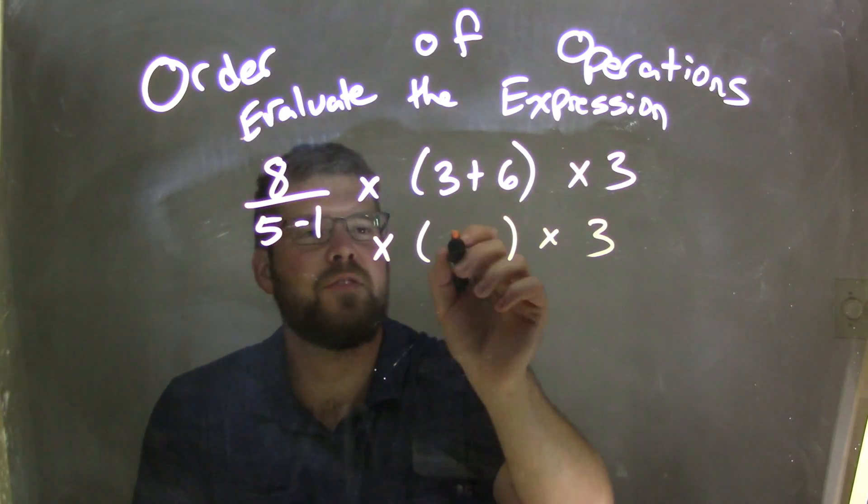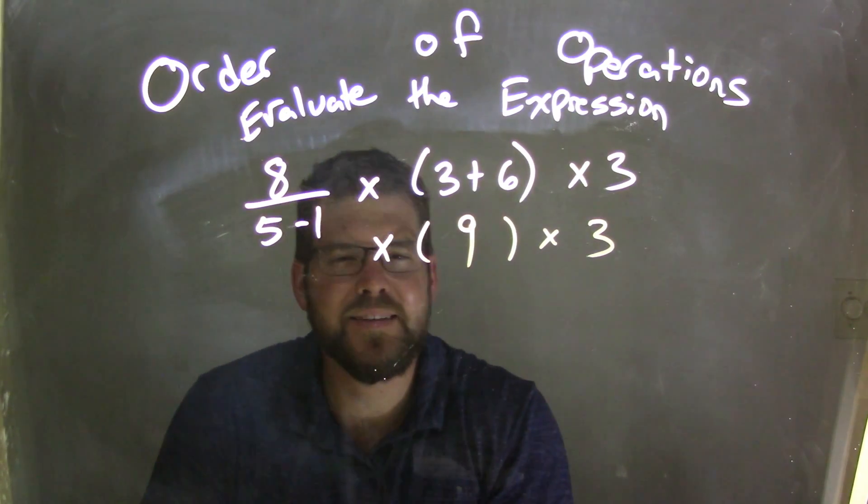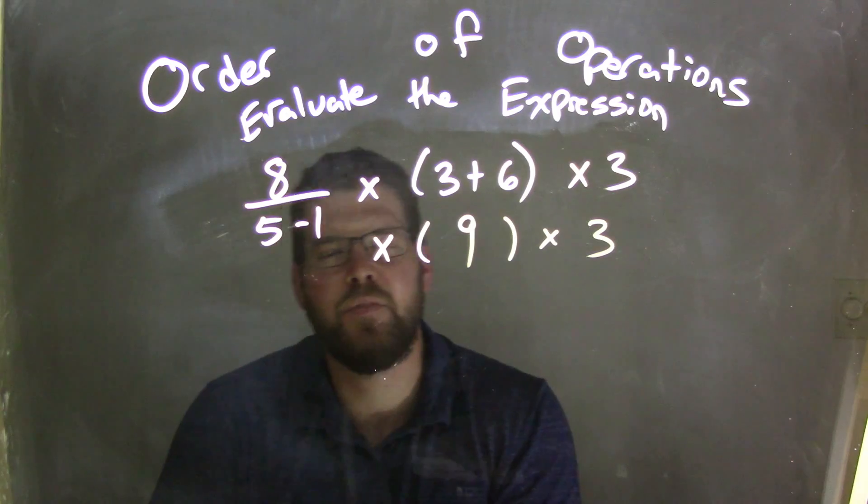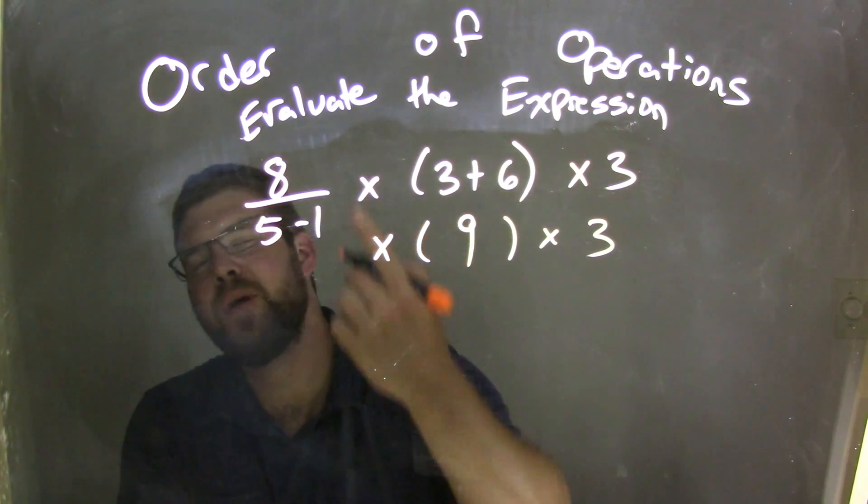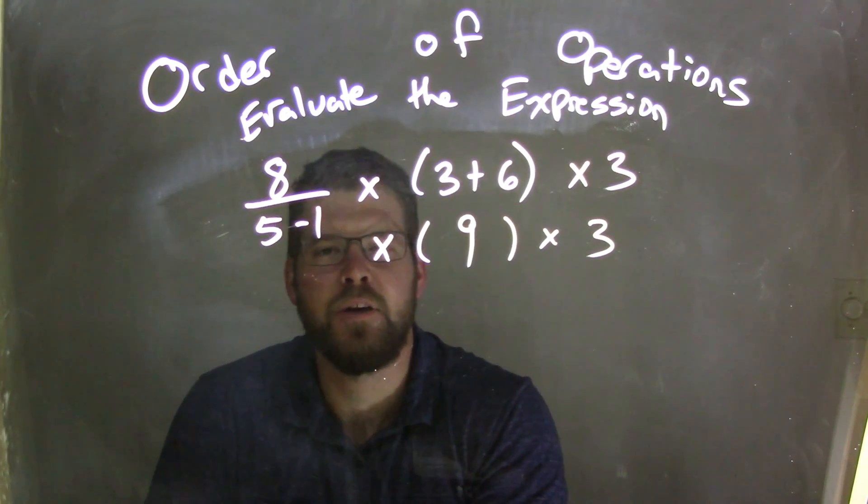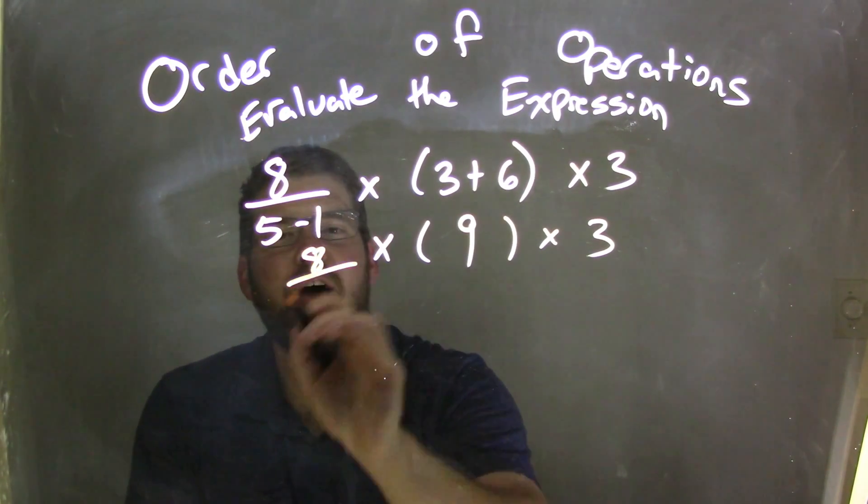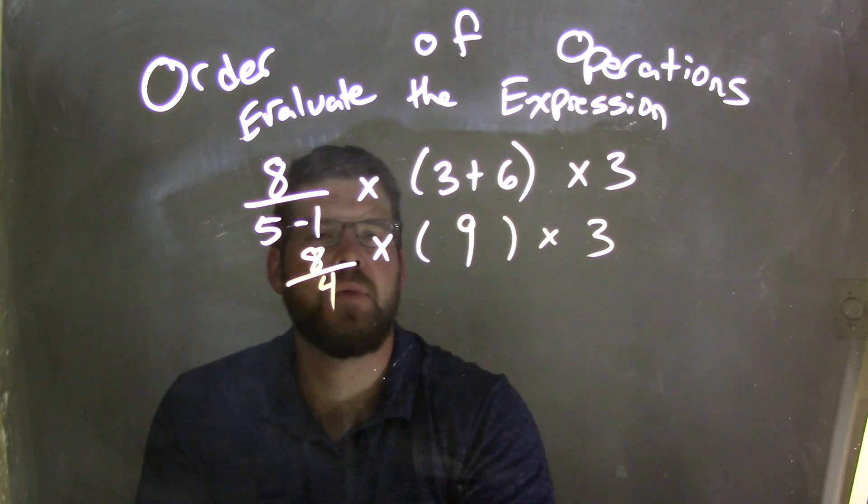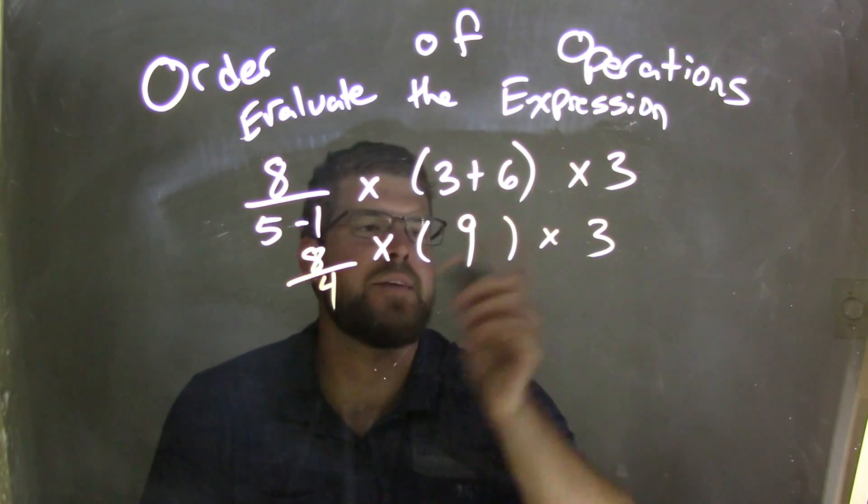And the 3 plus 6 simply comes out to be 9, and we're good. But I like to combine steps if I can. I know that preemptively thinking about the future, that the 8 over 5 minus 1, I need to simplify that fraction. So I'll keep the 8 at the top, but the 5 minus 1 simplifies to be 4. So I have 8 over 4 times 9 times 3.